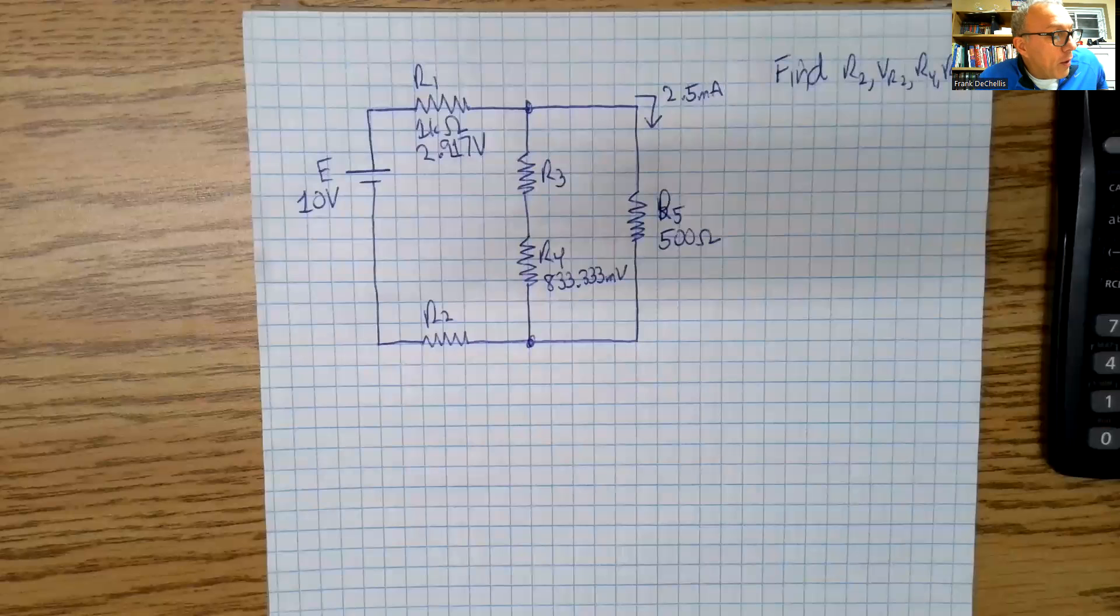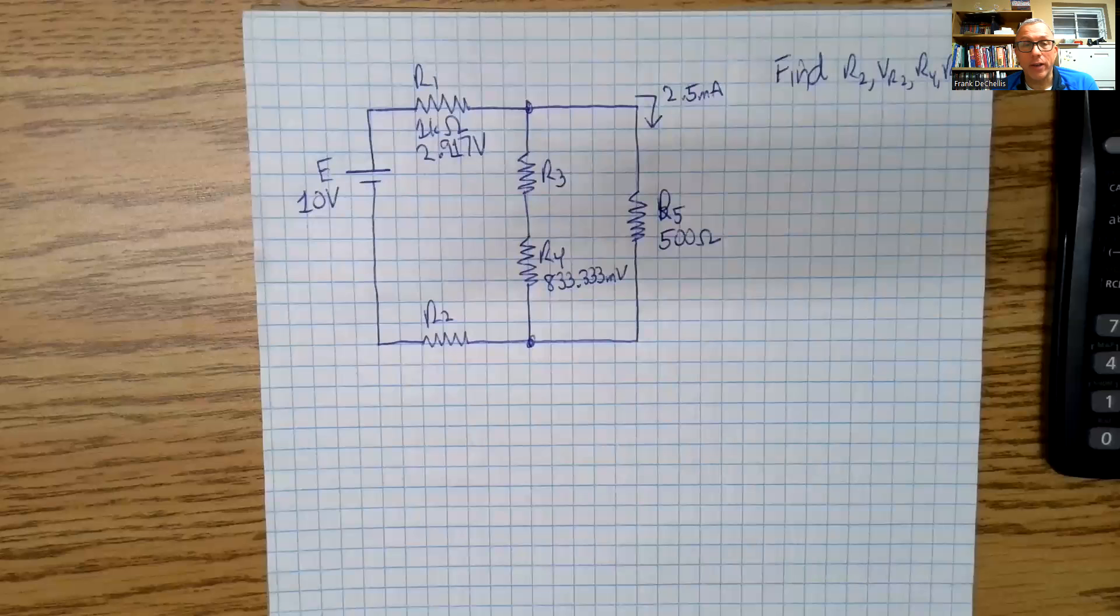What you shouldn't do is stress yourself into trying to solve this in one shot. What we're going to try to do here is just start calculating what you can. Wherever we have two values, we can calculate the third. If we have V and I, we can calculate R. If we have V and R, we can calculate I. If we have I and R, we can calculate V.